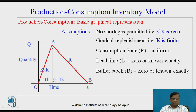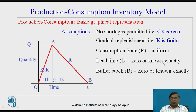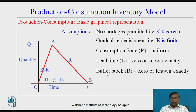Since we assume K as finite, we get the line O to A. Next, consumption rate R is assumed to be uniform. Lead time L is either 0 or it is known exactly — that is another assumption. Similarly, buffer stock or safety stock — the stock maintained to meet uncertainty in demand — is again assumed to be either 0 or known exactly.